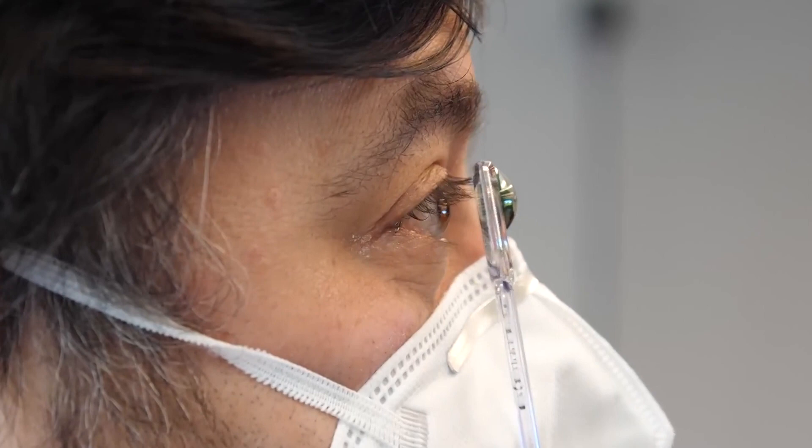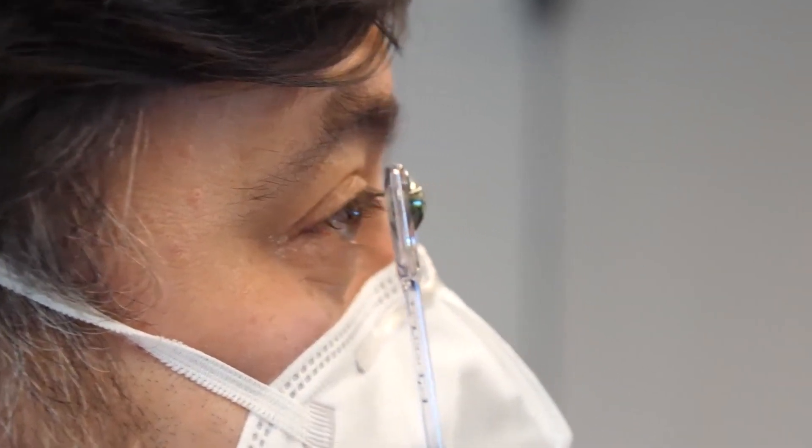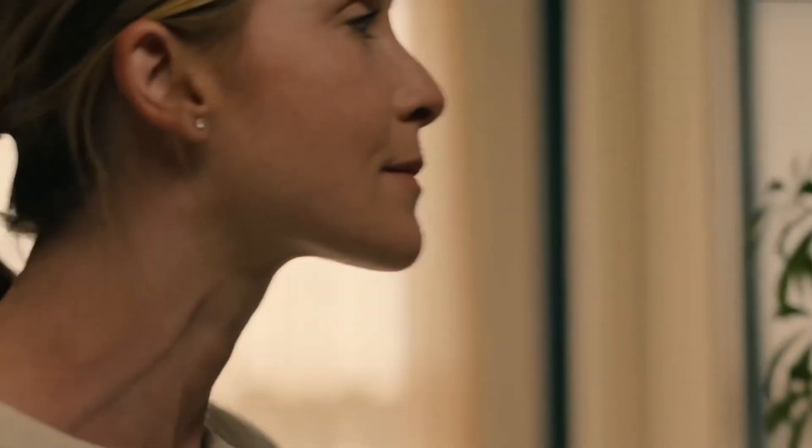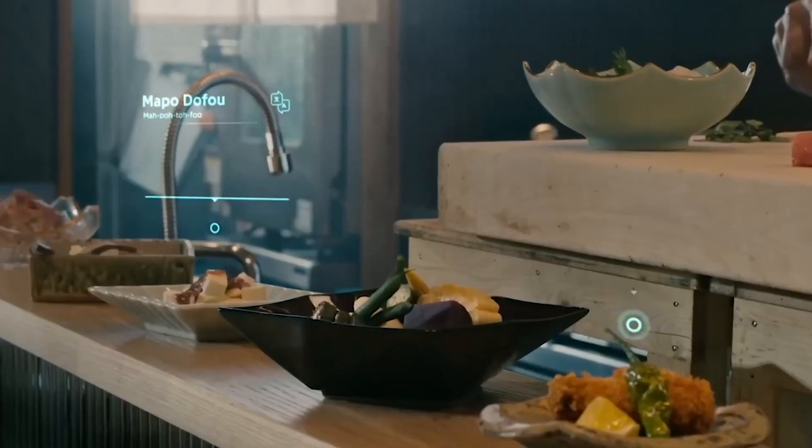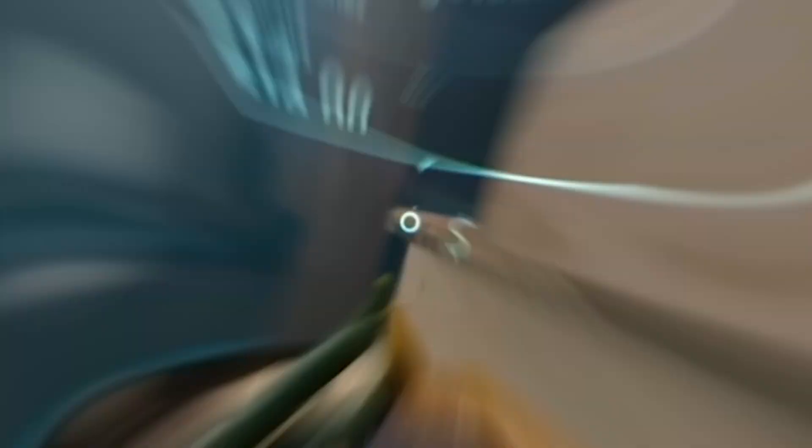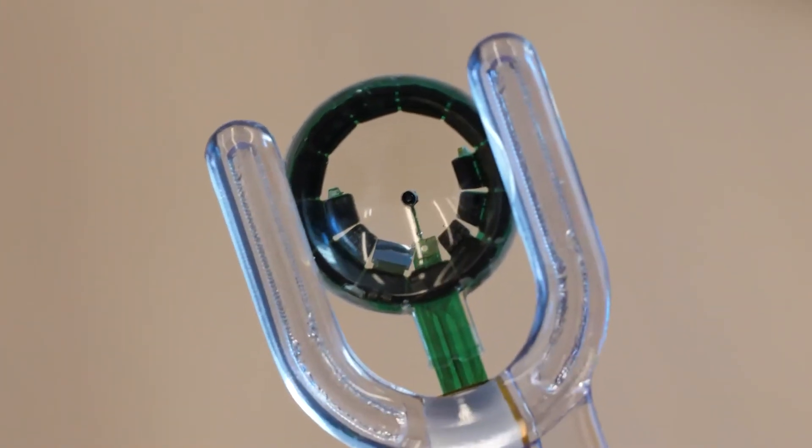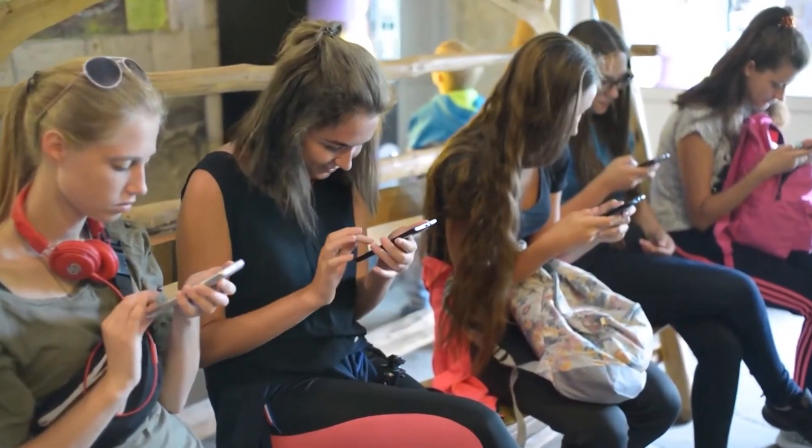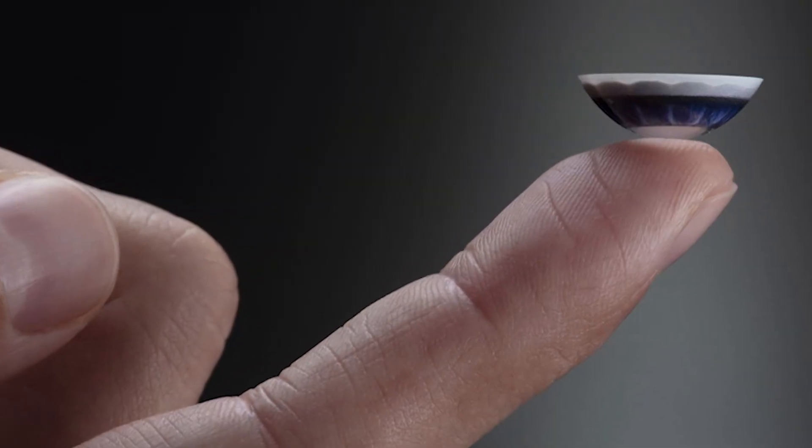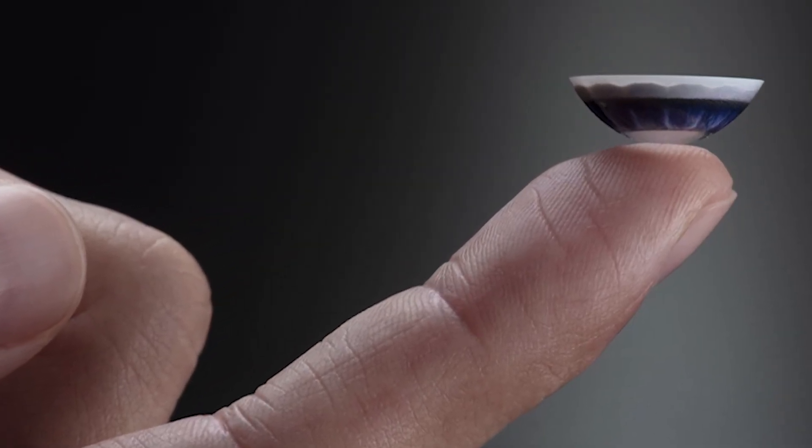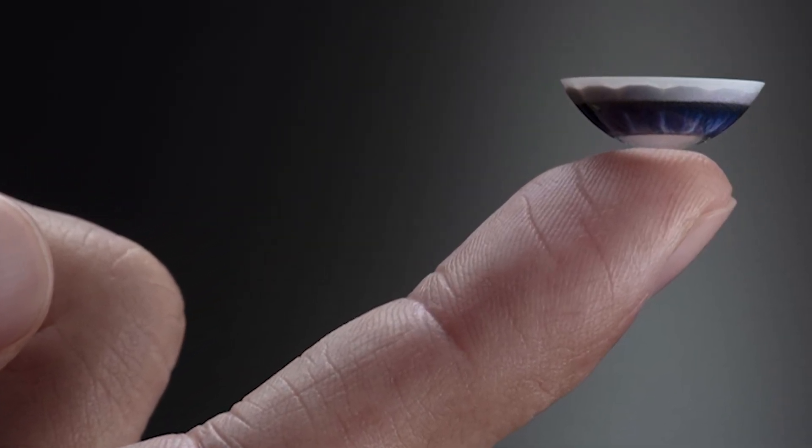Now here's the kicker. These lenses don't play nice with phones just yet. Why, you ask? Well, it's all about that power-efficient, short-range wireless connection Mojo Vision cooked up in the lab. Sure, it's in the 5 gigahertz band, aiming to keep interference at bay. But hey, even superheroes have their kryptonite, right? Mojo's still fine-tuning things to ensure that wireless connection is as slick as greased lightning.